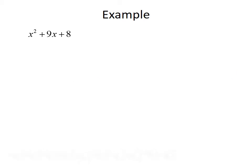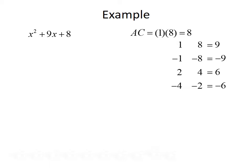Let's look at another example. We want to factor x squared plus 9x plus 8, where A is 1, B is 9, and C is 8. AC equals 1 times 8, which is 8. Looking at factors of 8: 1 and 8, negative 1 and negative 8, 2 and 4, and negative 4 and negative 2, which add to give 9, negative 9, 6, and negative 6 respectively. Since our middle coefficient is 9, we use the factors 1 and 8, rewriting the trinomial as x squared plus x plus 8x plus 8.